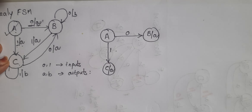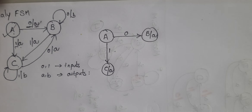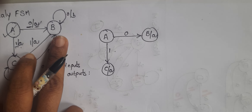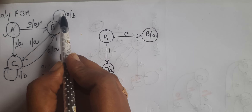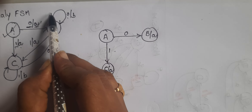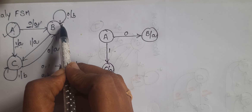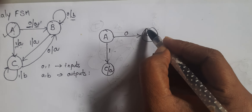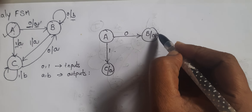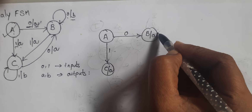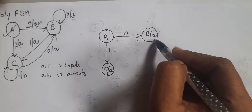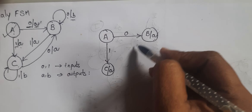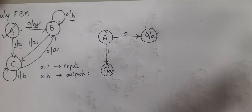We complete the first state part. Now for state b, when the input is 0, it remains in the same state and the output is b. But here the output does not match, so we have to develop an extra state.